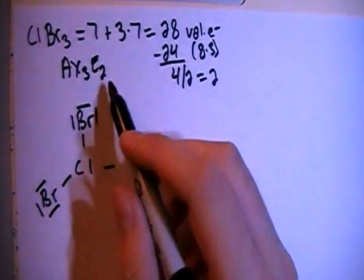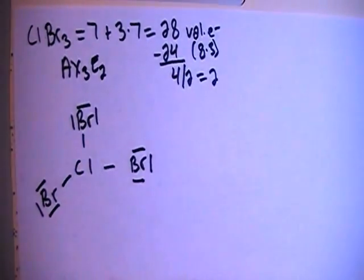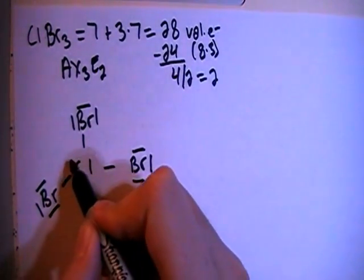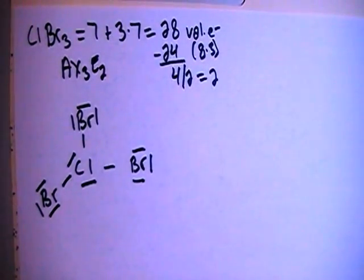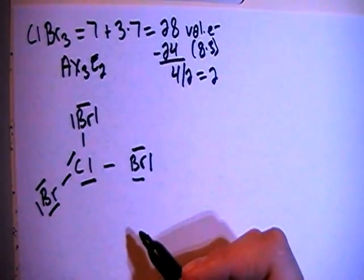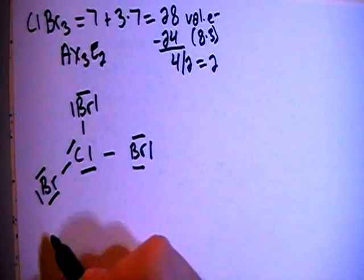Now we also have to add on these two non-bonding pairs of electrons to the chlorine so we can put one here and one here. It doesn't really matter where you put it on there. So there we go. That should be our final structure, but now let's go ahead and check the formal charges just to be sure.